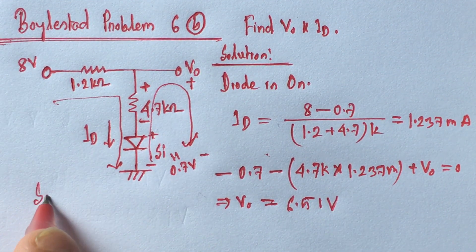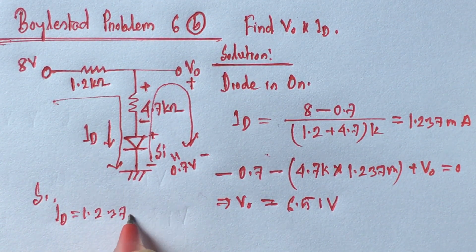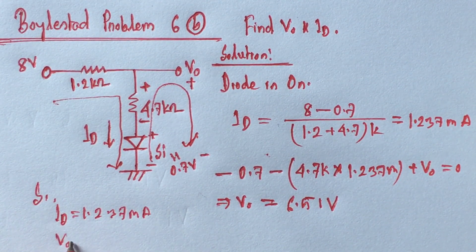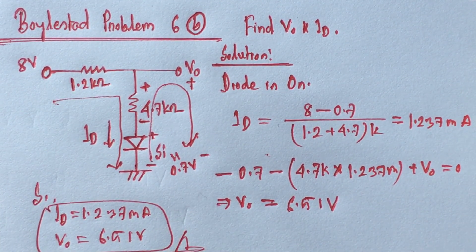So ID equals 1.237 milliamperes, and V0 is 6.51 volts. These are the answers. Thank you.